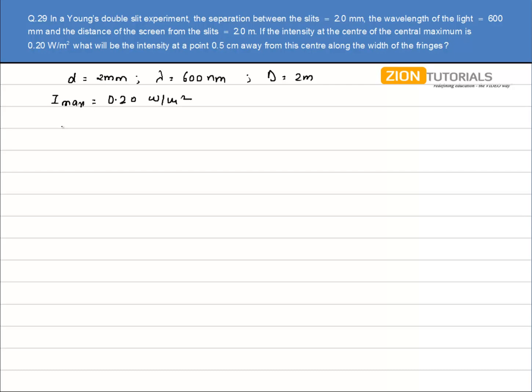Now, first of all I have to calculate the path difference at the point 0.5 cm away from the center fringe.